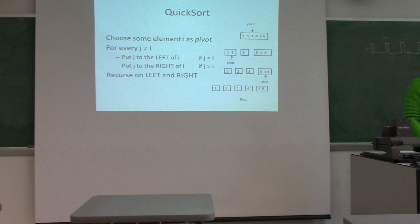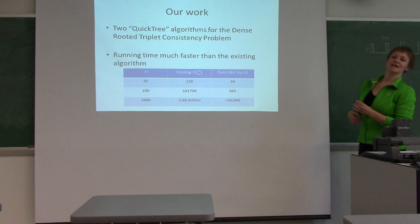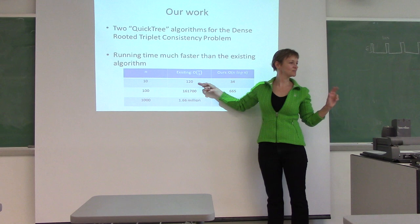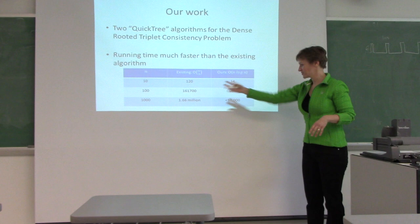Our work gives two Quick Tree algorithms for the dense rooted triplet consistency problem with running time much faster than the existing algorithm. For 10 species the existing algorithm needs approximately 120 comparisons; we need 34. For 100 species: 665 versus 161,000. For 1,000 species the difference is enormous.